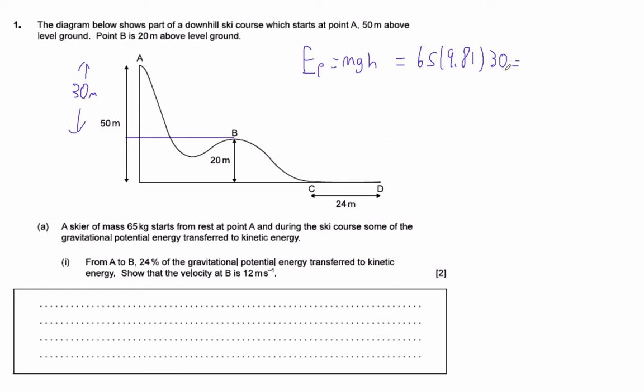Let's see, 30 times 65 times 9.81 is 19,129.5.